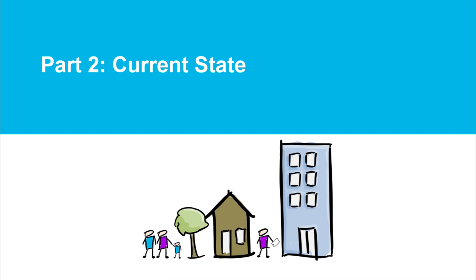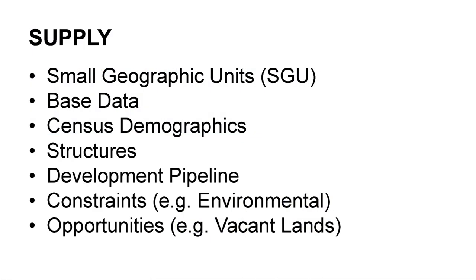Part Two: current state. A growth forecast is really comprised of two components — the supply side and the demand side. On the supply side, a geographic area such as a city or region is broken up into small geographic units, roughly the size of a subdivision plan. You put your base data into each of these geographic areas — that includes census demographics, structure information, and your development pipeline, covering all work in the construction and planning stages of new developments.